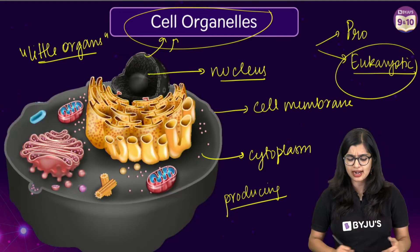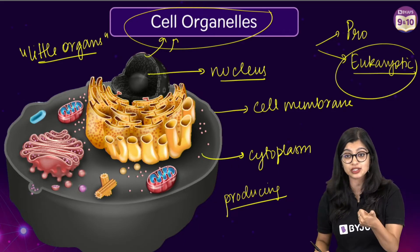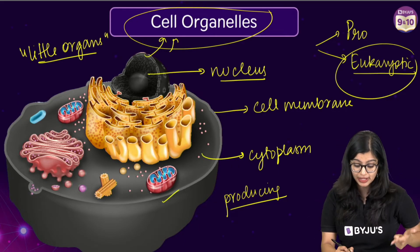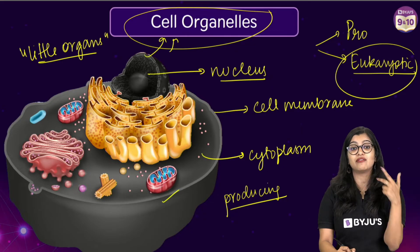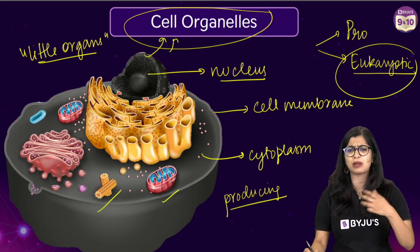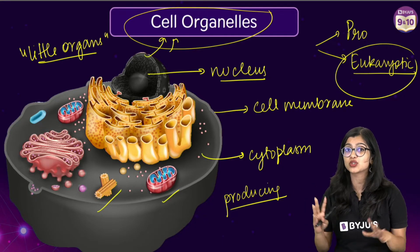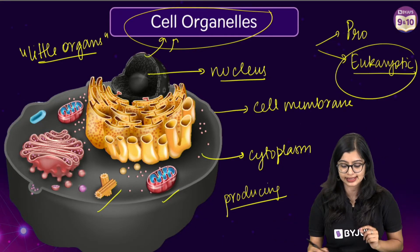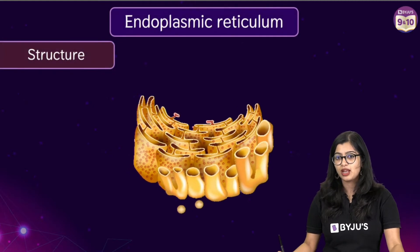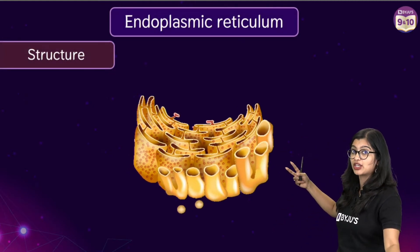In the cell there are various kinds of cell organelles — like we have the endoplasmic reticulum, we have the Golgi apparatus, we have the mitochondria, we have lysosomes, ribosomes, we have centrioles, plastids, so many of them. But today we are going to focus on one such cell organelle, which is the endoplasmic reticulum.